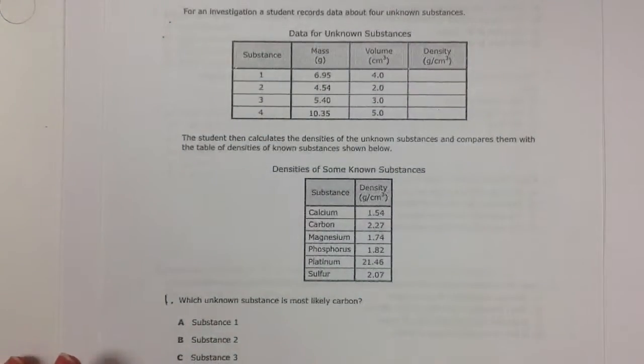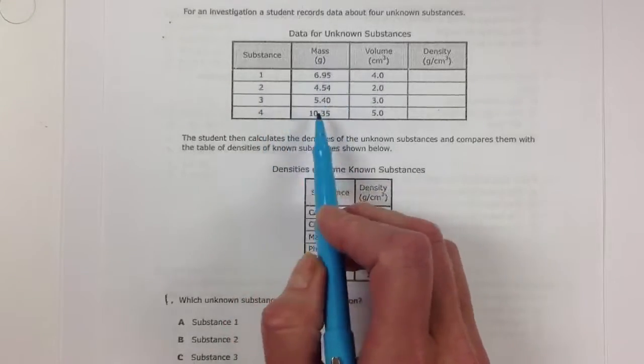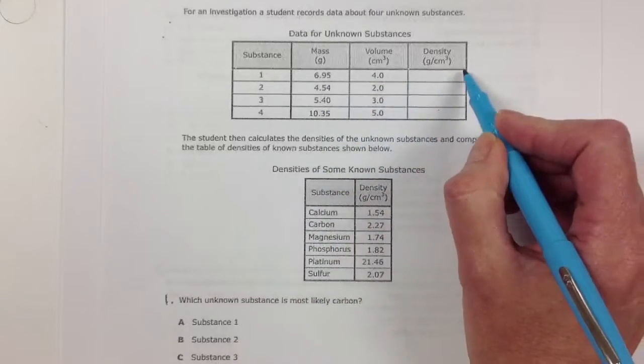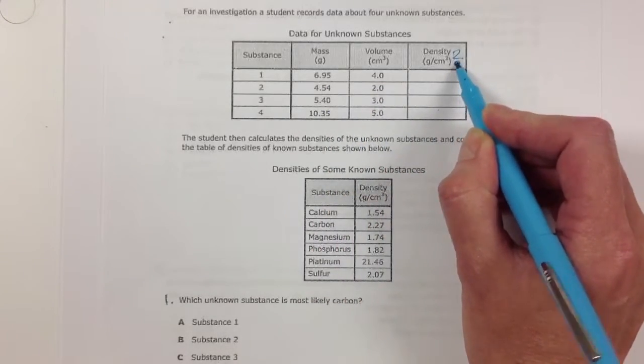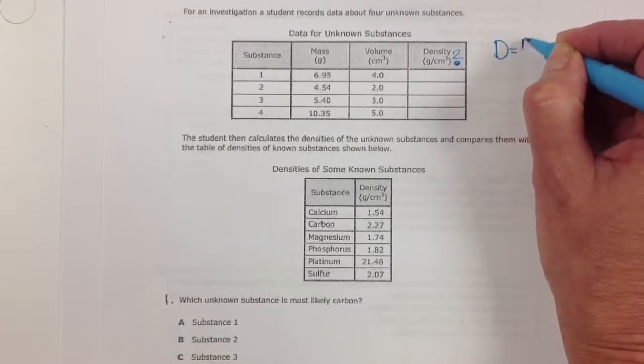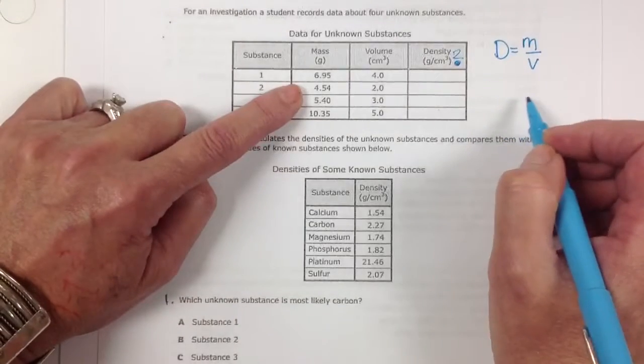So we're looking at this data table and we're seeing that different substances are having different amounts of mass and different amounts of volume. Well, we don't know the density. This is our unknown here. So what do we need to do? Well, if we know that density is equal to mass divided by volume, we need to take the mass and divide it by the volume.